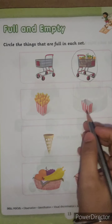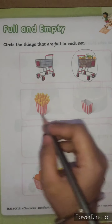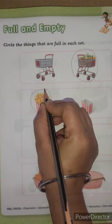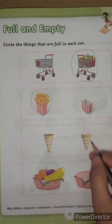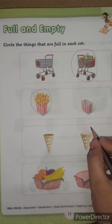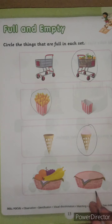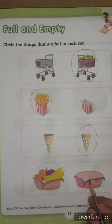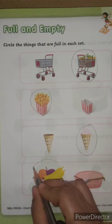Now, french fries — this pack is empty, so we are going to circle this full packet of french fries. Ice cream cone — this one is empty and this one is full with ice cream, so we are going to circle this. And now, this basket contains fruits and this basket contains nothing, so it is empty and this one is full — we are going to circle this.